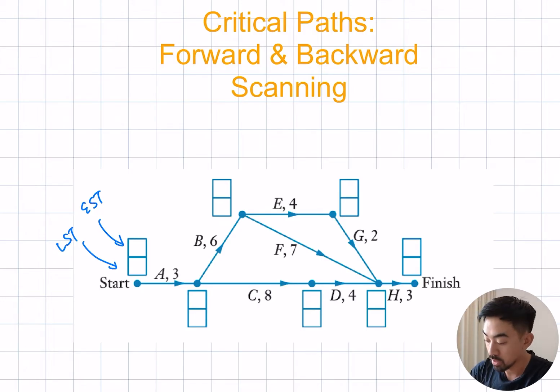What I mean by that is we're always going to start with 0. So I'm going to put a 0 here and go along the edge. 0 plus 3 gives me 3 in the next box. So I keep going up. 3 plus 6 is 9. Next one down, 3 plus 8 is 11. Up here, 9 plus 4 is 13.